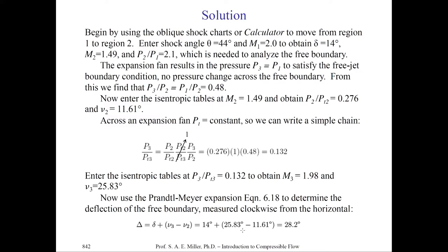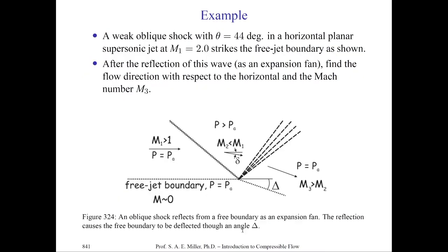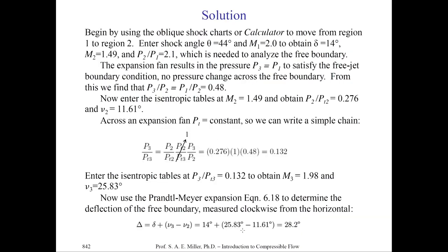The deflection angle of the free boundary, measured from the horizontal, is 14 + 25.83 − 11.61 = 28.2 degrees. From there, you can solve for the other thermodynamic values since you know the angles, Mach numbers, and total conditions, and the solution is closed. I encourage you to try this problem to solidify concepts of shocks and expansion systems — more complicated problems have this shock-and-expansion system repeating to create shock cell structures in off-design supersonic jets.